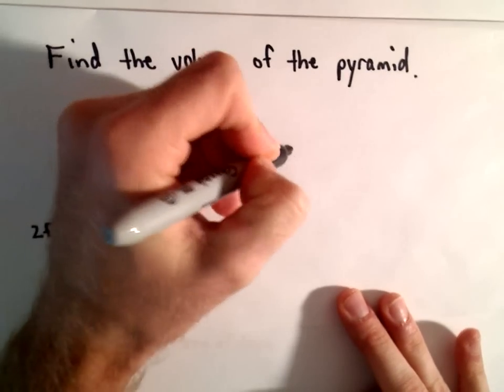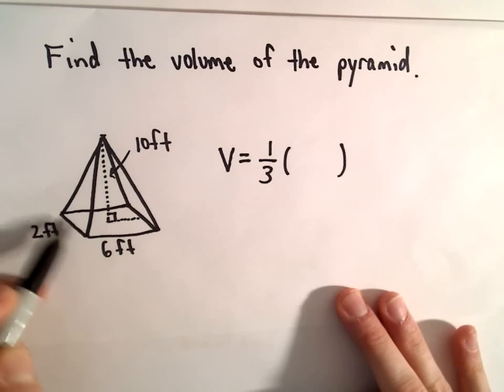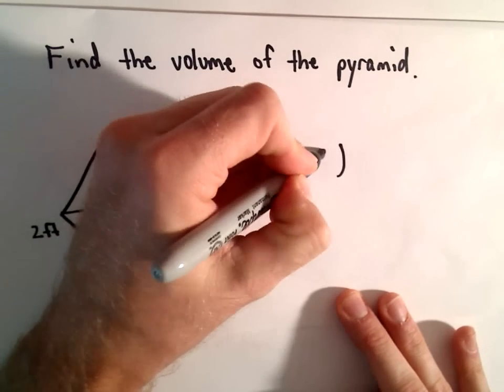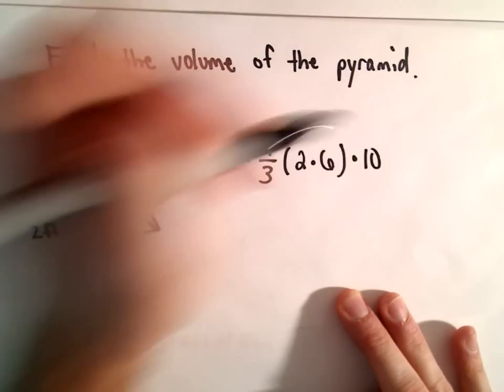So we have one-third multiplied by the base. Well, since it's a rectangle, we'll just take the width times the length, so two times six. And then we simply multiply that by the height, which is ten.